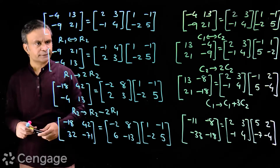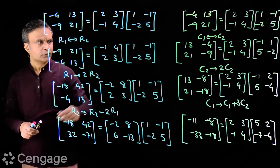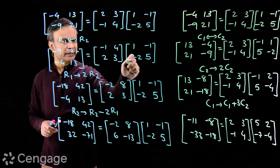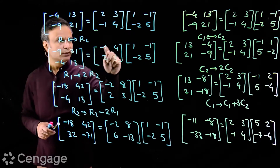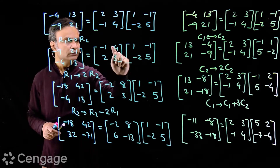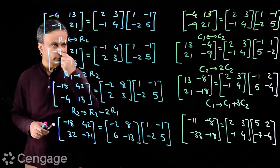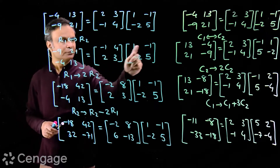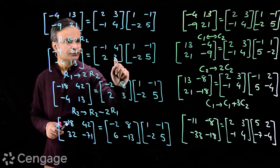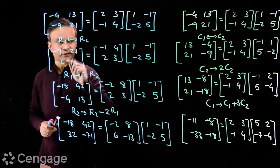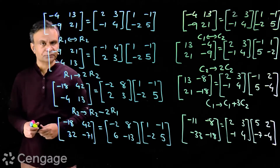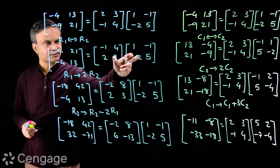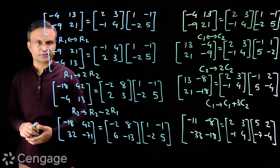Now, what is the magical thing? The multiplication gives: -1 - 8 = -9, 1 + 20 = 21, then 2 - 6 = -4, -2 + 15 = 13. So here the product of these two matrices is equal to this matrix.